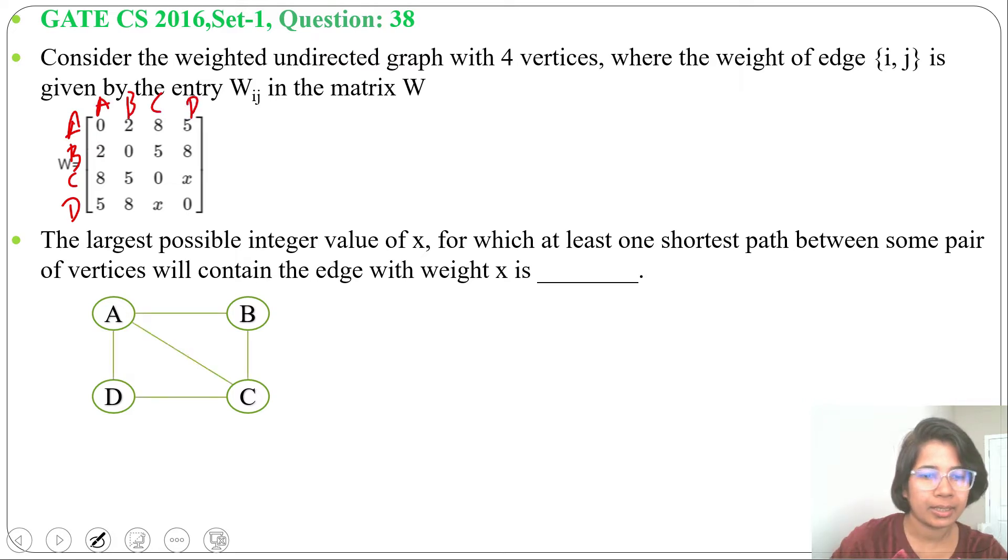Next we will add the edges. So A to B cost is 2, then A to C cost is 8, A to D cost is 5. Next for vertex B, B to C cost is 5, B to D cost is 8. Next C to D cost is X.